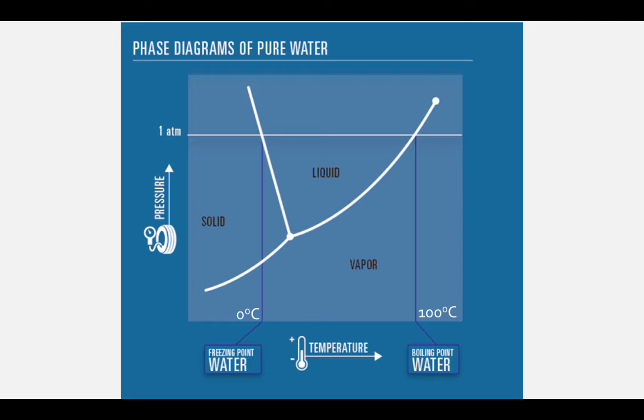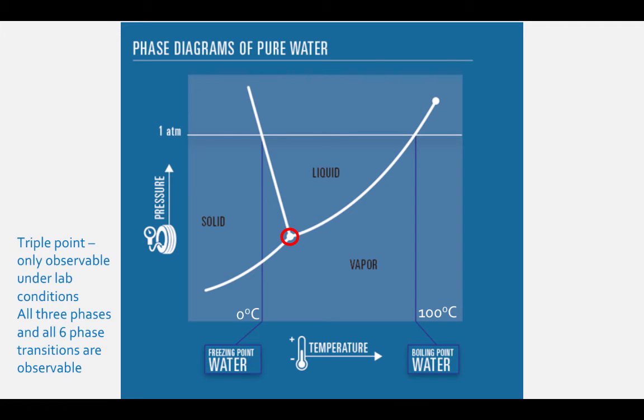There is also a point indicated by the intersection of all three phases. This is called the triple point. At this special temperature and pressure, which is usually only observable under laboratory conditions, all three phases exist and all six phase transitions are happening at the same time.